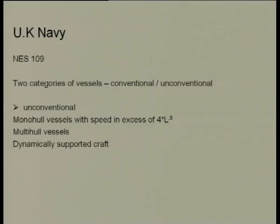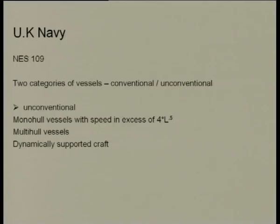The UK Navy has framed its rules according to a code called NES 109. NES 109 is like the SOLAS codes — it represents the series of codes followed by the UK Navy. The UK Navy categorizes ships into a few classes. The primary way they classify vessels is in terms of conventional and unconventional crafts.